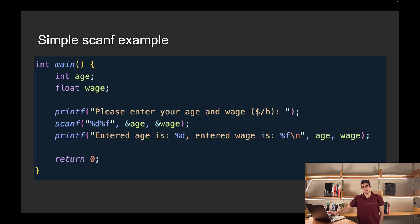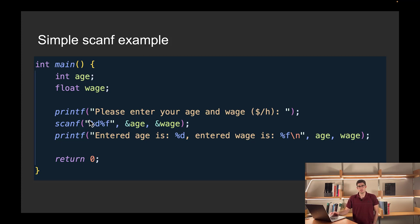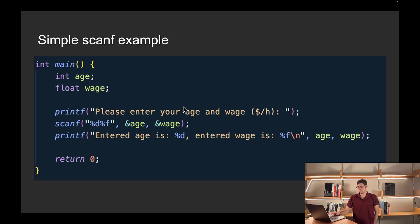If this still doesn't make a lot of sense, we have a simple example here, where I'm defining two variables that I want to populate with values written by the user. We're prompting the user to enter values for age and wage in dollars per hour. Then we call scanf with the format string %d %f, so that we first read in an integer and store its value in age, then read in a floating point number and store its value in wage. Then we just repeat the values back to the user.